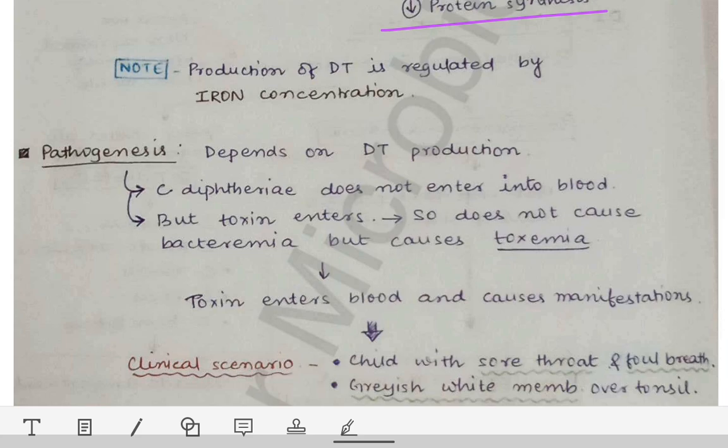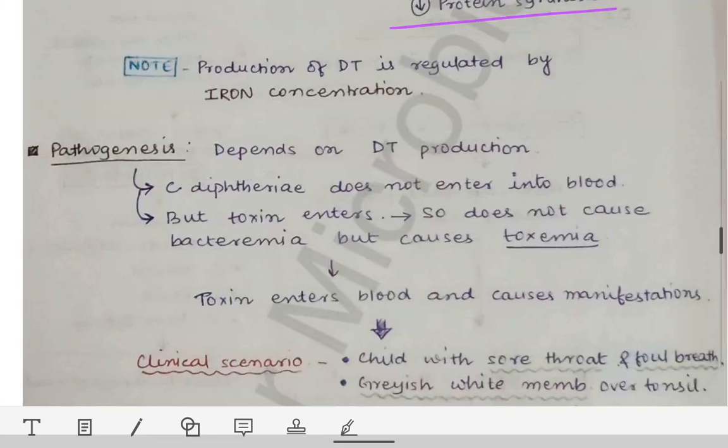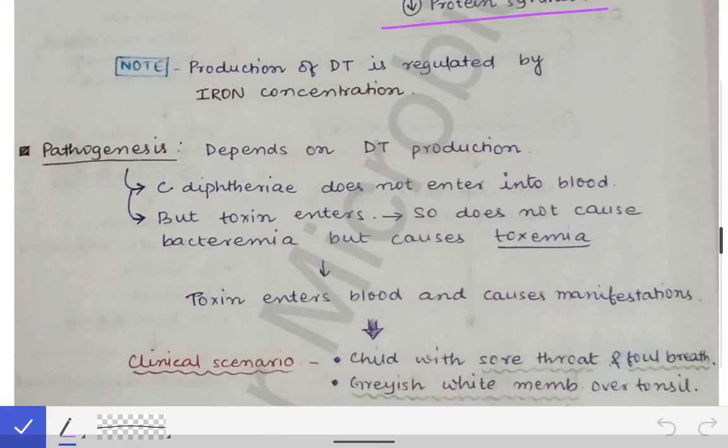An important note is the role of iron in diphtheria toxin production. Diphtheria toxin production is regulated by the iron concentration in the body. Iron is a mineral that influences production of the diphtheria toxin — this may be asked as an MCQ.